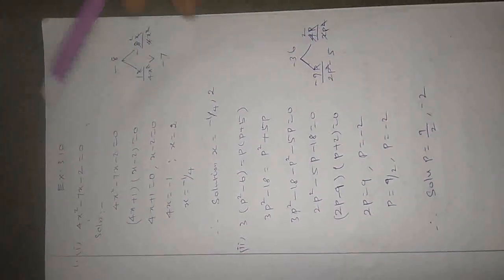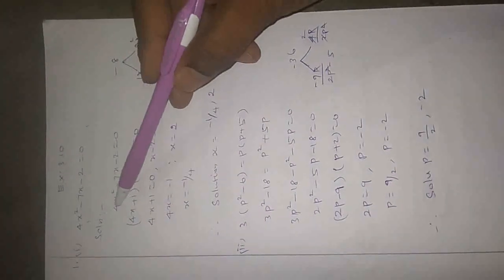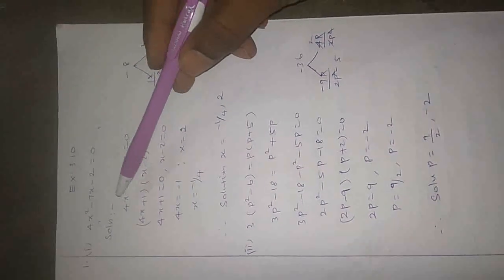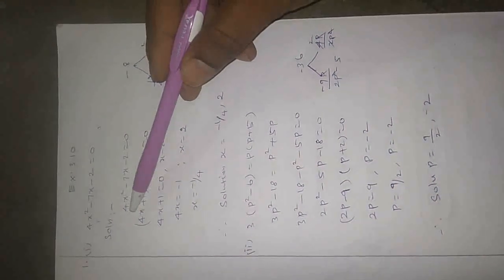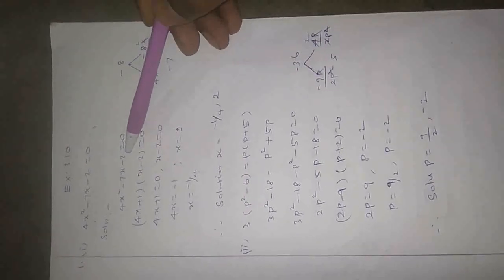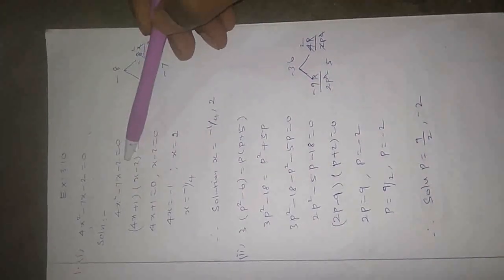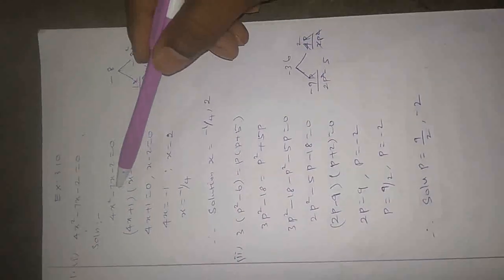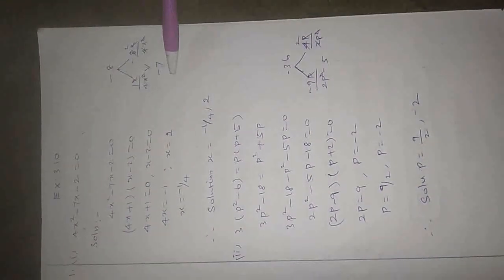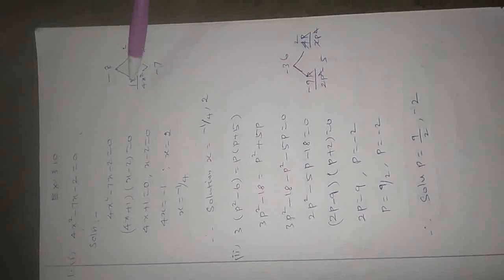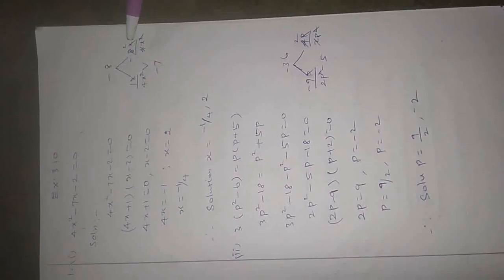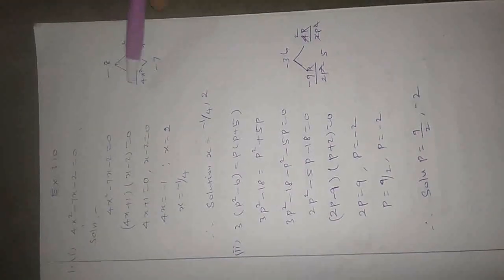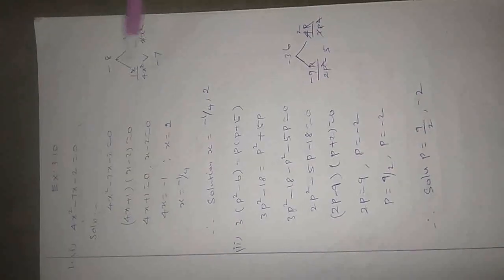Use the factorization method. First of all, multiply the first term by the last term — that is the coefficient of x squared into the constant term. So 4 into minus 2 equals minus 8. Adding this gives the central value minus 7. Possible numbers: 1 into minus 8 equals minus 8, and 1 minus 8 equals minus 7.